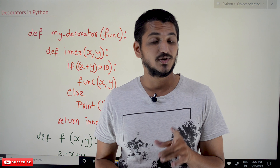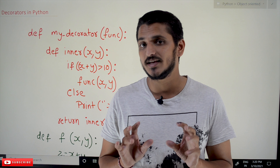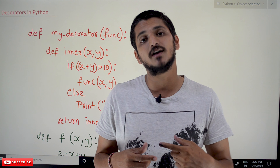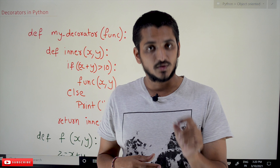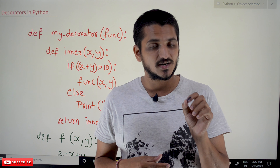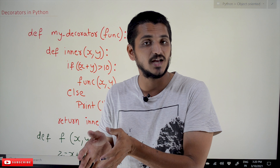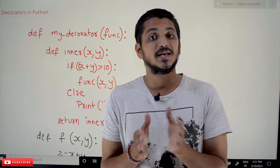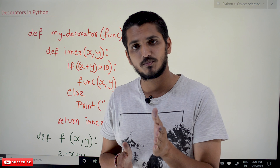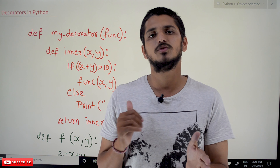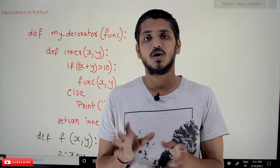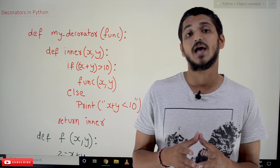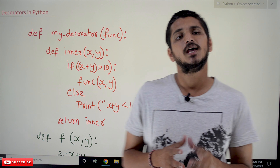In our previous class we clearly discussed about how functions are passed as variables to other functions and how we return function variables. We discussed examples, how they work, how the memory is allocated. Based on the assumption you are following our previous class, we will continue this class. This class is completely dependent on the previous class.